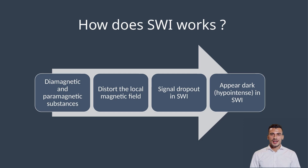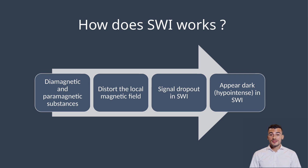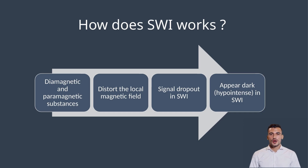Now the question is, how does susceptibility weighted imaging work? The diamagnetic and paramagnetic substances distort the magnetic field around them, which leads to signal dropout in SWI images, and those areas thus appear dark on SWI.